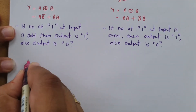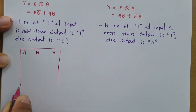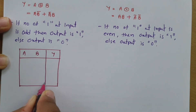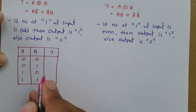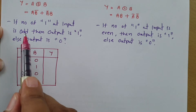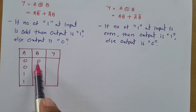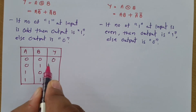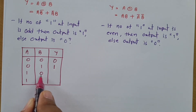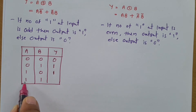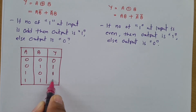For a 2-input XOR gate, inputs are A and B and output is Y. For 2 inputs there are 4 possibilities: 0,0 — 0,1 — 1,0 — and 1,1. For 0,0: even number of 1s at input, so output is 0. For 0,1: odd number of 1s, so output is 1. For 1,0: odd number of 1s at input, so output is 1. For 1,1: even number of 1s at input, so output is 0.